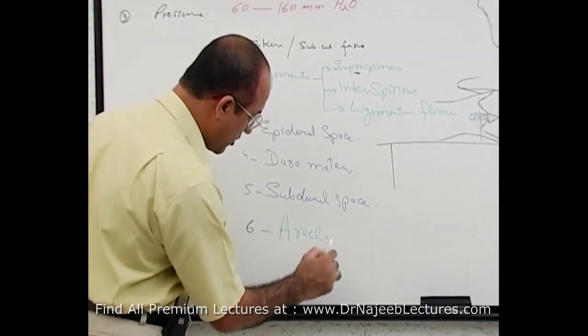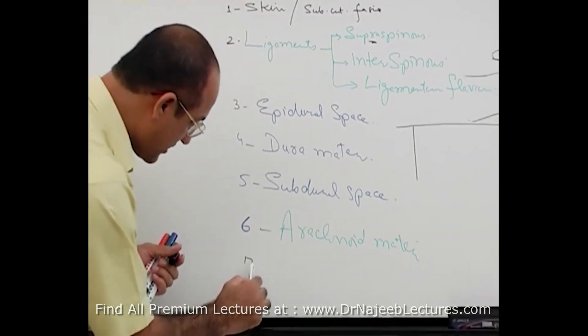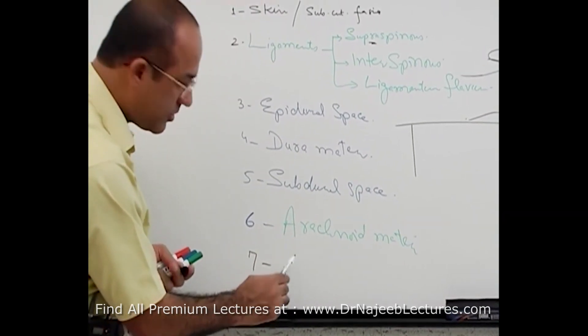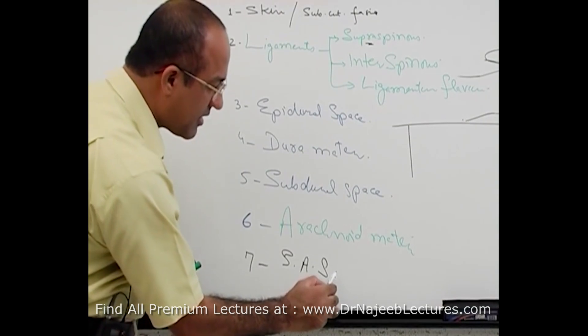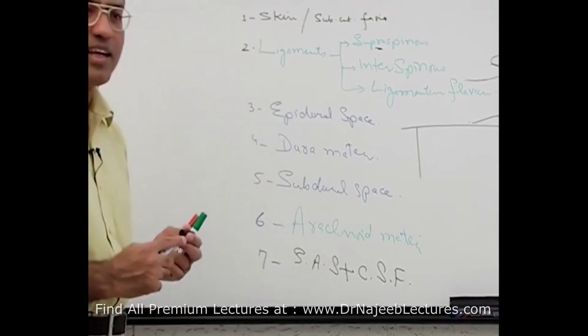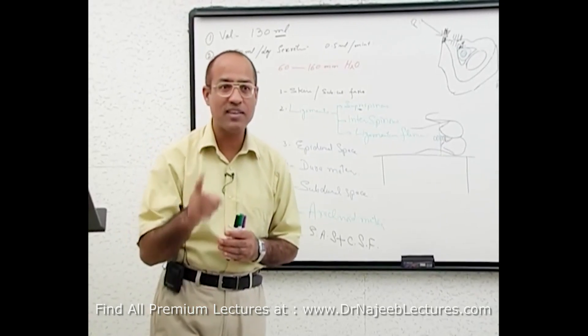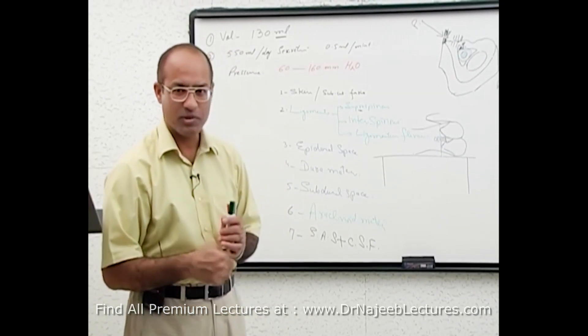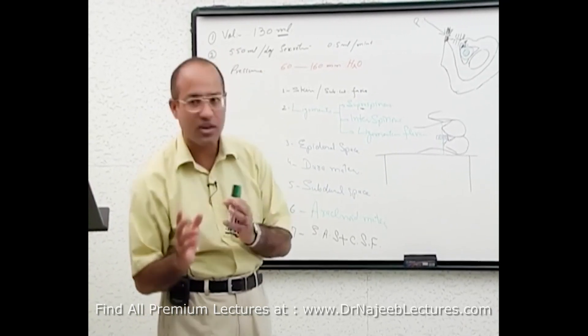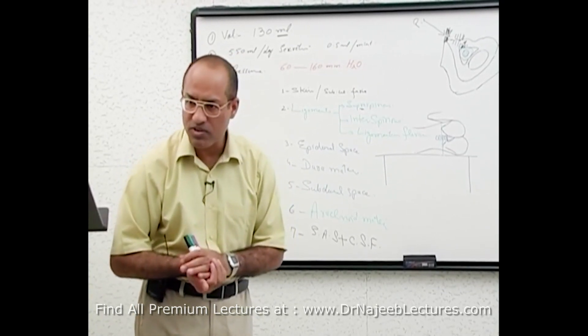So dura mater, subdural space and of course after that what will come? Arachnoid matter. And after that? Now as soon as you pierce the arachnoid matter you enter into subarachnoid space. Of course which is having CSF. And then after that what you will pierce? After that you should not pierce anything. Pia mater is not pierced. Because if you touch the pia mater it means you are going to damage the spinal cord. Because pia mater is always in very intimate relationship. Closely plastered over the central nervous system or attached with the central nervous system.